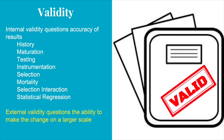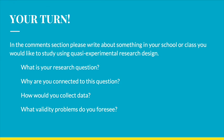External validity questions the ability to make the change on a larger scale. Using our research question as the example, if a single class made the change at one elementary school, external validity questions whether the entire school or entire district would be able to make the change. In the comments section of this post, please write about something in your school or class for which you would like to use a quasi-experimental research design. Answer these questions: What is your research question? Why are you connected to this question? How could you accurately collect data? And what validity problems do you foresee?